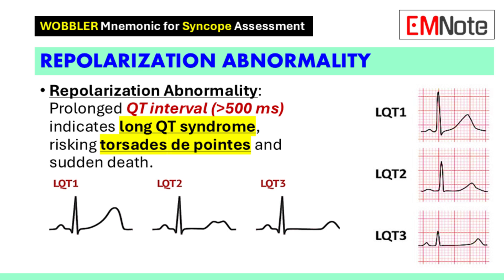Repolarization abnormalities include prolonged QT intervals, defined as greater than 500 milliseconds, which are indicative of long QT syndrome. This condition poses risks for torsades de pointes and sudden death. Short QT syndrome also exists, but is encountered less frequently.